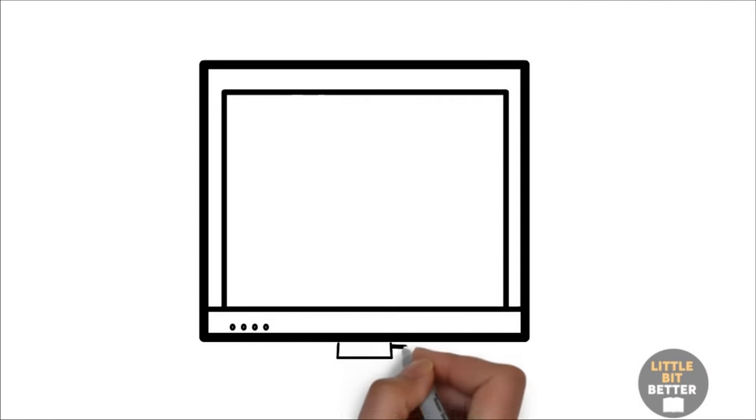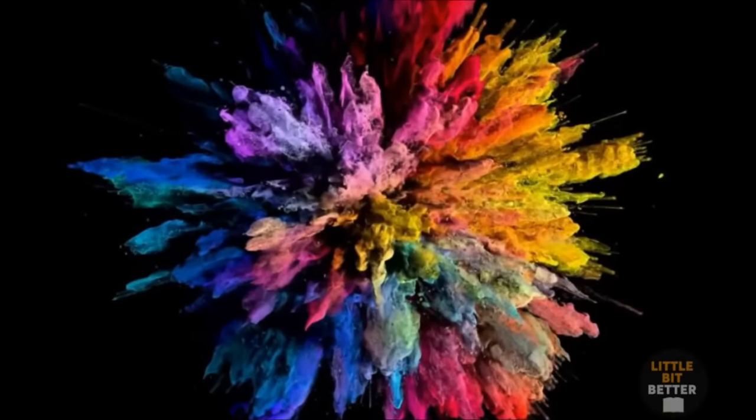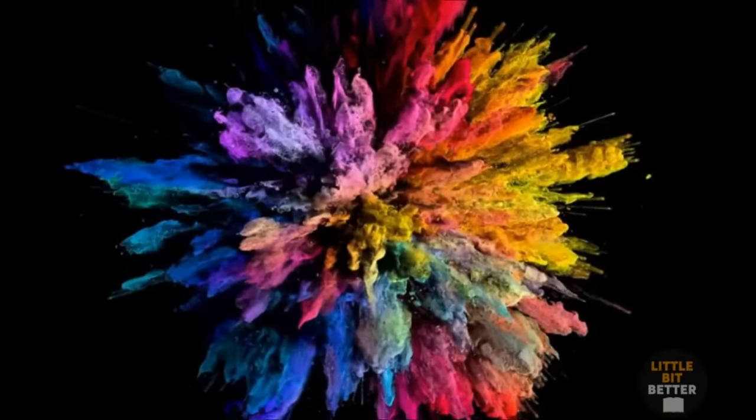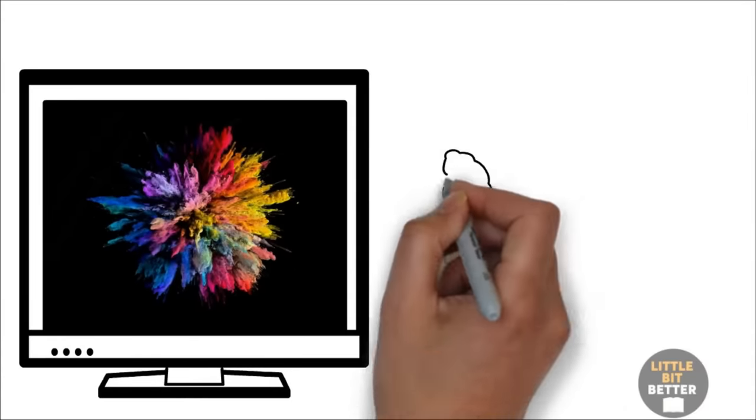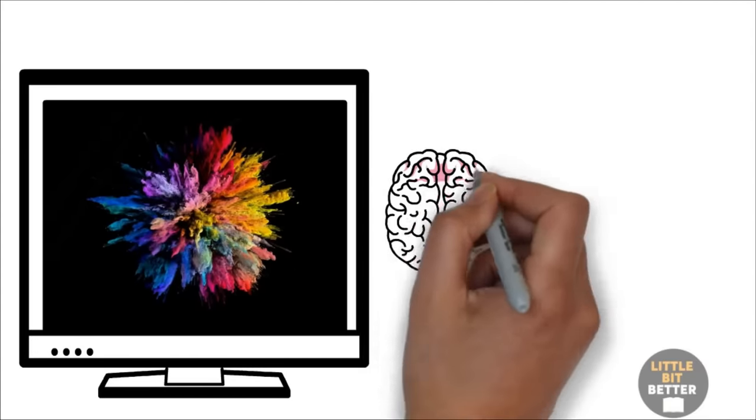You probably think that your TV, computer, or the phone you're using right now to watch this video produces millions of colors. But it doesn't. It produces only three: red, green, and blue. Your screen is designed to hack your brain. By mixing these primary three colors, a new color is created in your head.